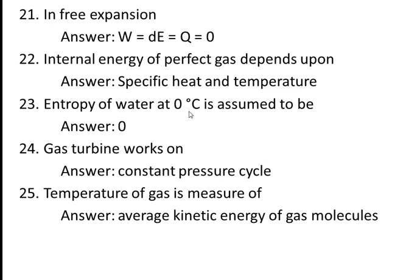Twenty-third question: entropy of water at zero degrees Celsius is assumed to be equal to zero. Twenty-fourth question: a gas turbine works on — answer: constant pressure cycle. It is also called the Brayton cycle or Joule cycle.